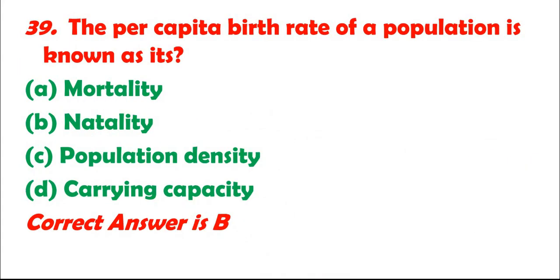Question 39: The per capita birth rate of a population is known as its: A. Mortality. B. Natality. C. Population density. D. Carrying capacity. Correct answer is B.